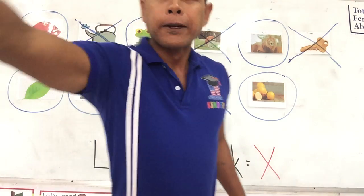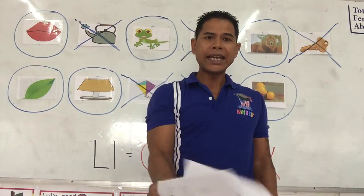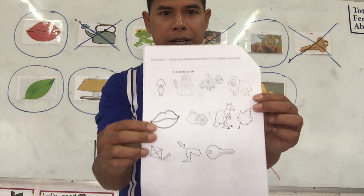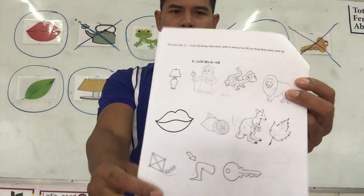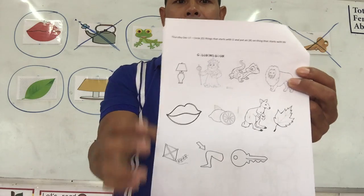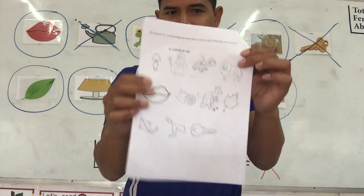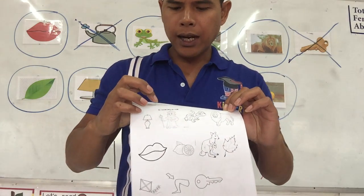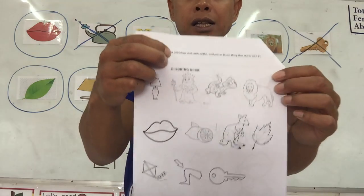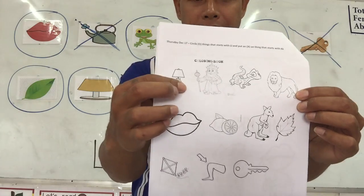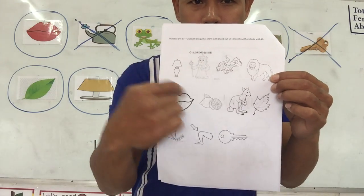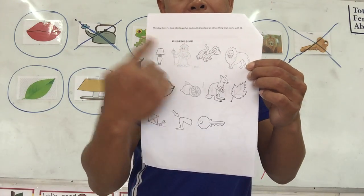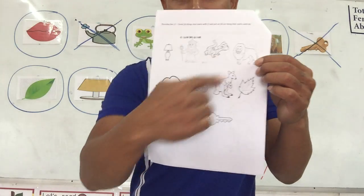So in your activity, I want you to look at the pictures the same way: if it's letter L, you circle it. Letter L, you circle it. Letter K, you cross it out.